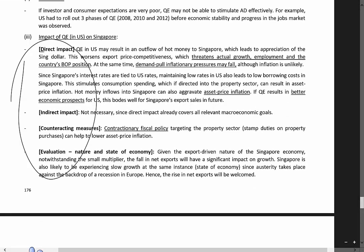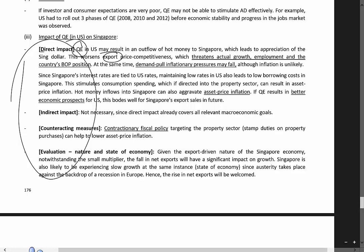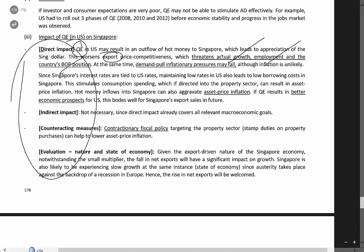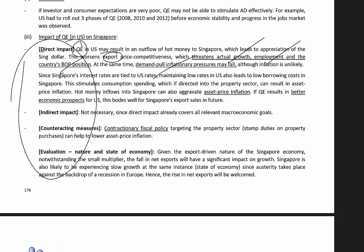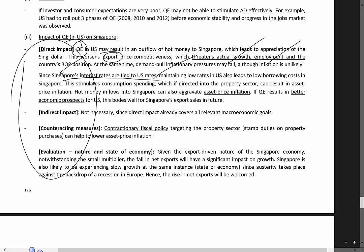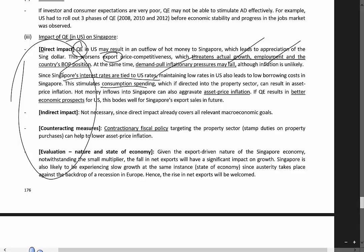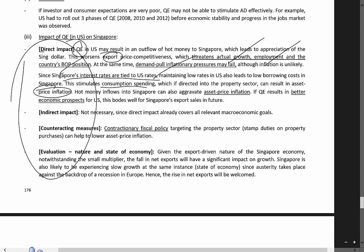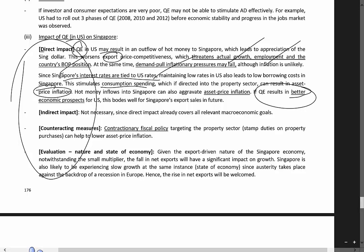Considering the impact on Singapore, we use the DICE approach. In terms of direct impact, QE can be linked to export sales for Singapore. Because hot money flows into Singapore, the Singapore dollar becomes stronger, which may lower net exports with impacts on growth, unemployment, balance of payments, and inflation. We must also not forget that the backdrop to QE is very low interest rates in the US. Since Singapore's rates are tied to US rates, low interest rates mean consumption and investment in Singapore also rise.